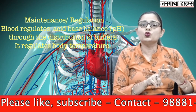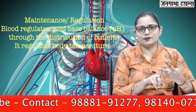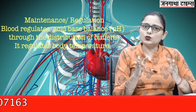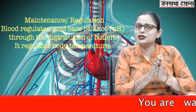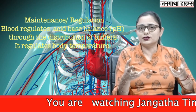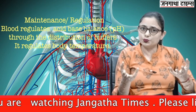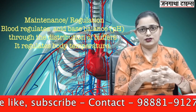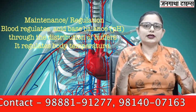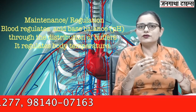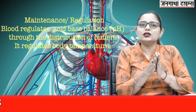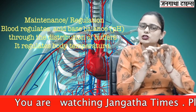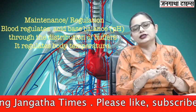Blood plays a very important role in maintaining body temperature. Water in the blood plasma has coolant properties. Moreover, blood vessels near the skin undergo vasoconstriction and vasodilation as required to either prevent heat loss or increase heat loss. If body temperature is getting low, blood vessels near the skin undergo vasoconstriction — their lumen tightens and the diameter reduces — so body heat is conserved.